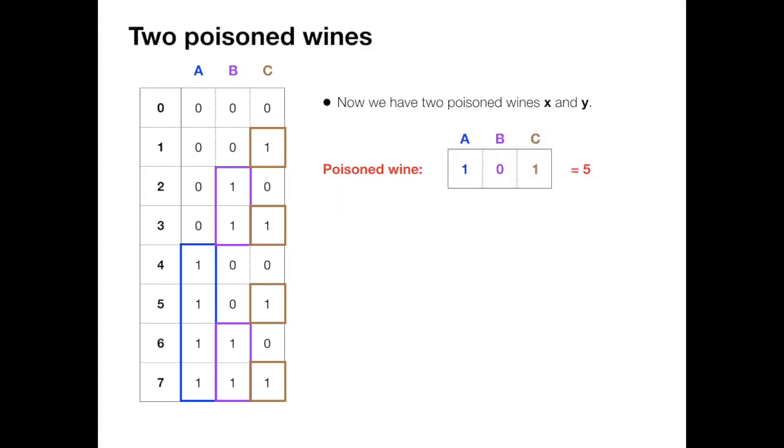So let's see what happens in this case. Assume that we use the same strategy as previously and we get the same representation 101. But now we have two poison wines x and y, so we cannot say that x must be 5 or y must be 5.